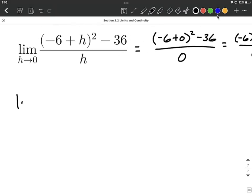what I'm going to do is I'm going to go ahead and distribute. I'm going to think of this as the limit as h approaches 0 and two copies of negative 6 plus h multiplied together.